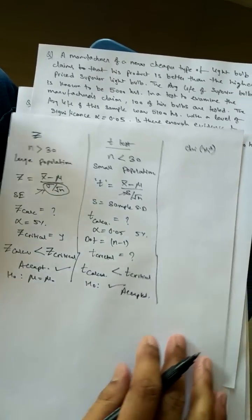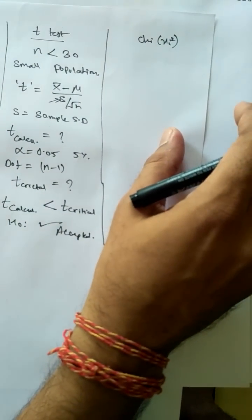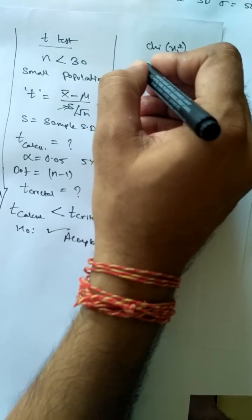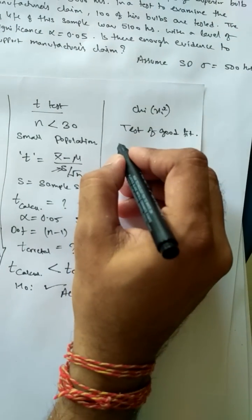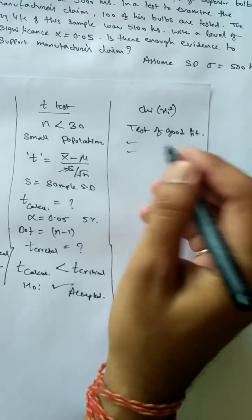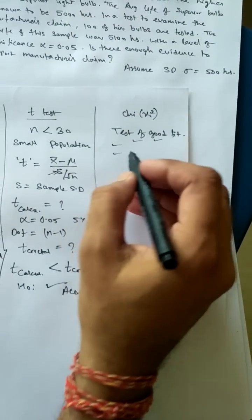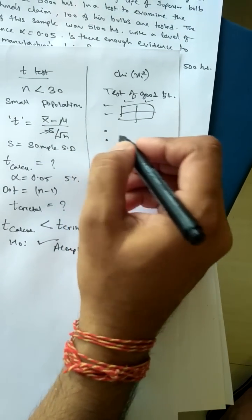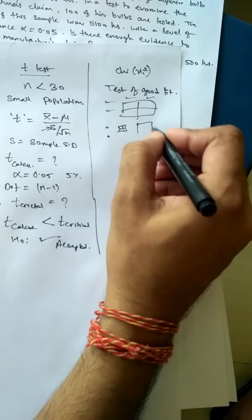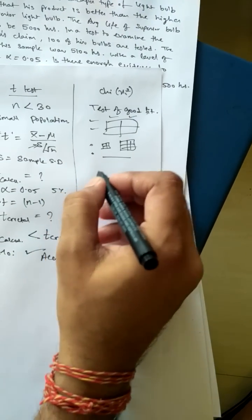Now let us come to the chi-square test. In the chi-square test, there is no specific population or sample size condition. The chi-square test is also called the test of goodness of fit. You compare between two parameters to conclude whether there is a relationship between them or whether they are independent. You will basically come across two types of questions: one in matrix form and another as a linear problem.